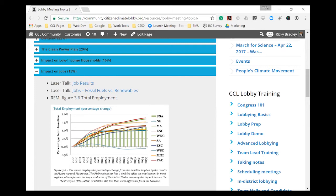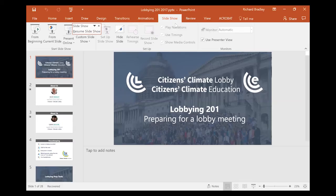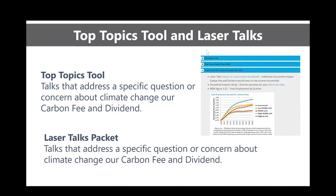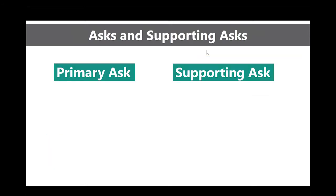Before DC, you'll also receive a packet of laser talks — the most important ones for this year's conference. These are available on CCL Community from the same Washington DC Toolkit page I just showed you. You can access the laser talks specific to the 2017 conference directly from that one page.